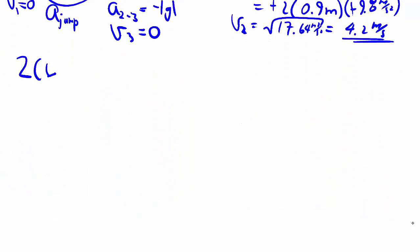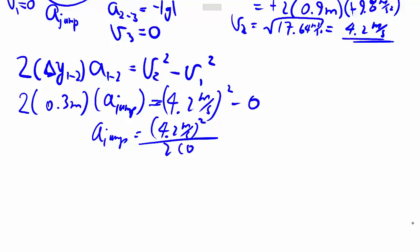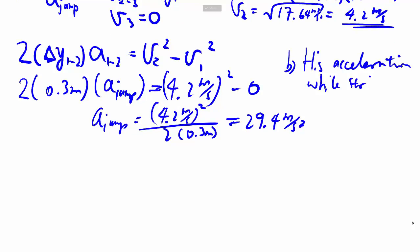Again, we have 2 delta y1to2 this time, times a1to2 is equal to v2 squared minus v1 squared. In this case, we have 2 times 0.3 meters. This is a_jump that we're not sure what it is. This we just worked out to be the square bit. Now let's keep that minus 0. And so a_jump is 4.2 meters per second all squared divided by 2 times that. Working out the number, we get 29.4 meters per second squared, which is substantial, but he doesn't do it for very long. Don't forget the direction of upwards.